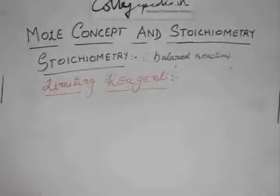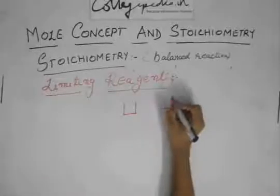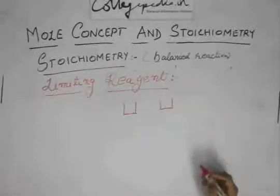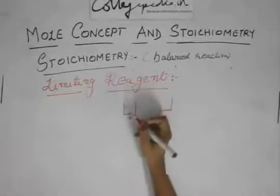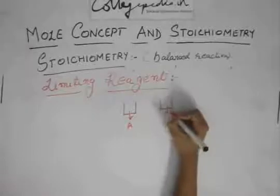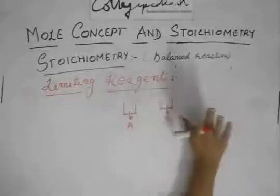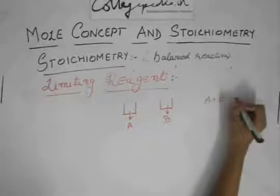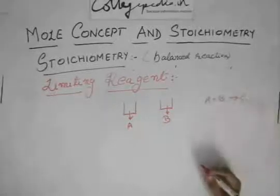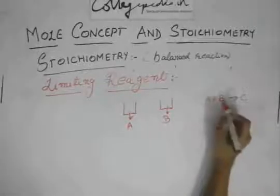So this limiting reagent, before we get into this, let us say we have two boxes. In one we have suppose A and in another we have some B, some substance. And we don't know how much of A is there, how much of B is there. And we have a reaction A plus B gives C. And we know this reaction is like this, only one mole will react with one mole of B.